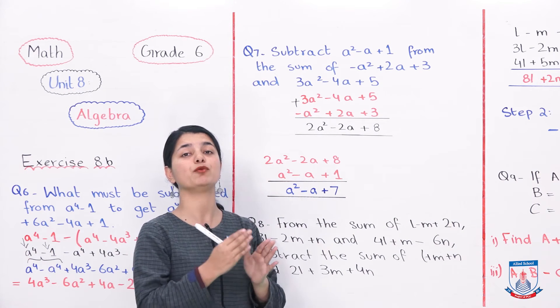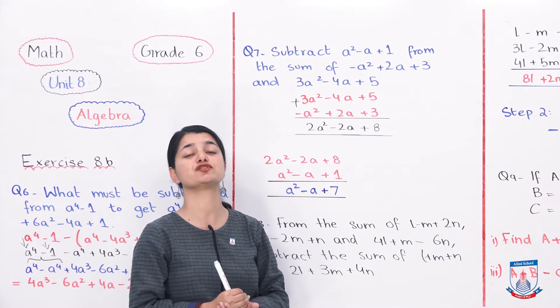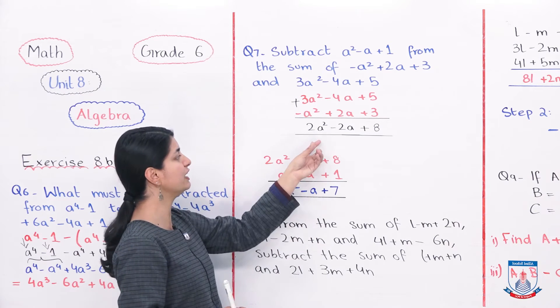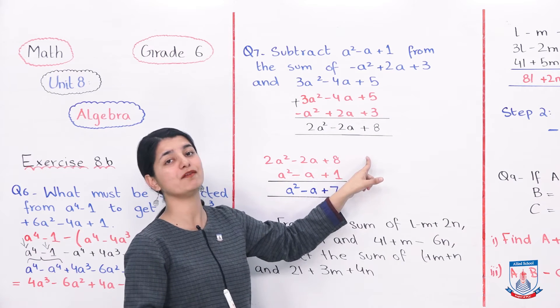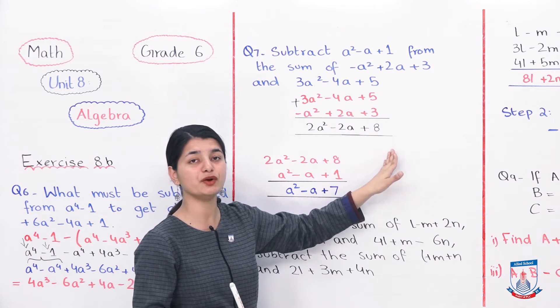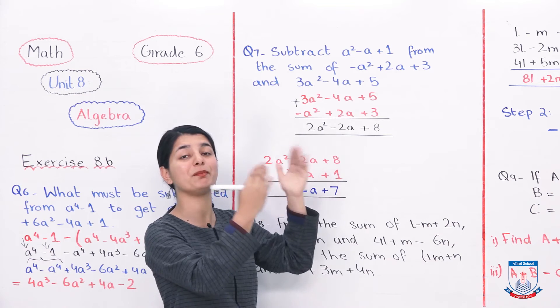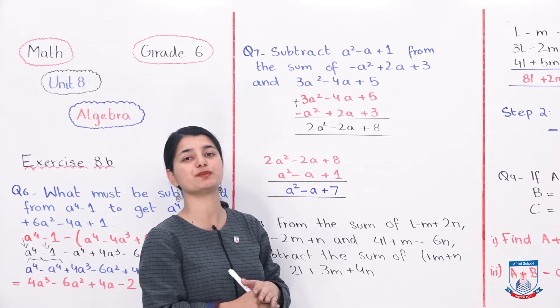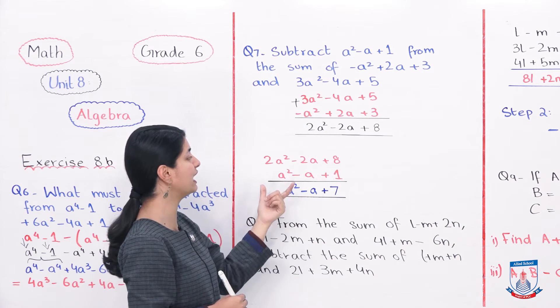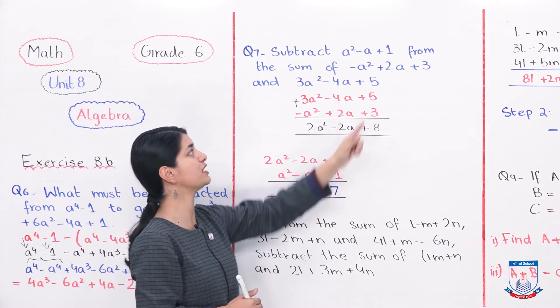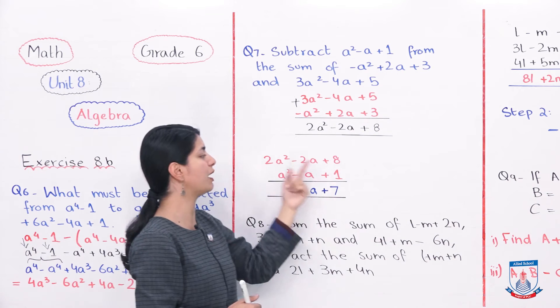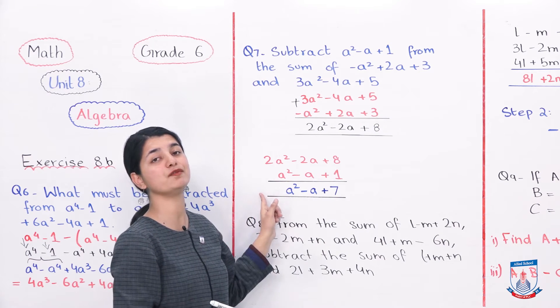Next we have, the first expression that was given to you, you have to subtract this from it. So this thing, you will write it above, because from this you have to subtract. From whatever you have to subtract, that comes first, from that you have to remove the second expression. So now the second, the expression that was given to us first, A^2 minus A plus 1 right here. We have noted it here, now we have to subtract.